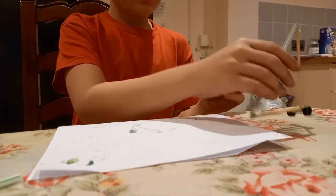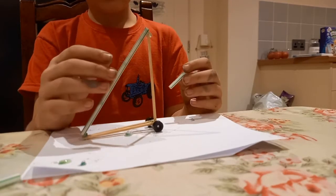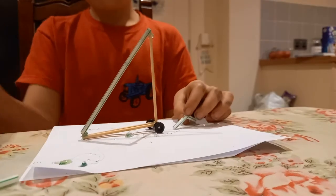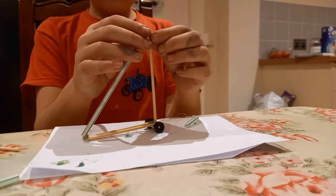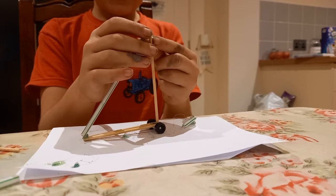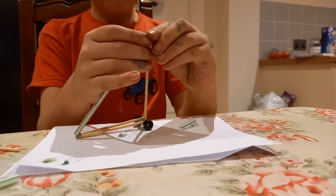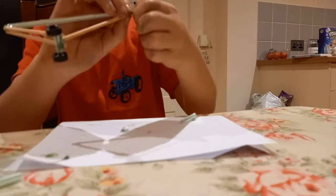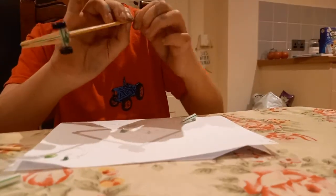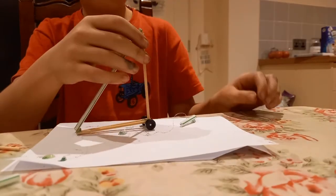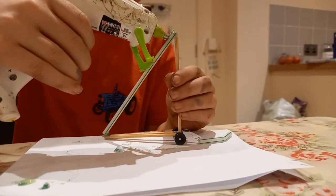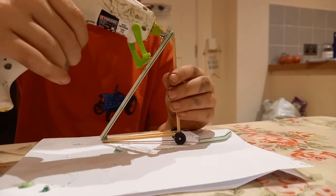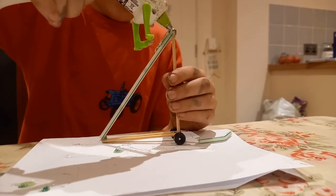Before you get the hot glue gun, just make sure that there isn't any leaking stuff there because if there is, try and get it off, because when you paint it later it's harder to go over with the paint. Now we're going to put some glue down here like this and a bit on the top there.